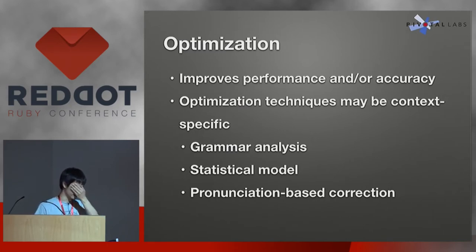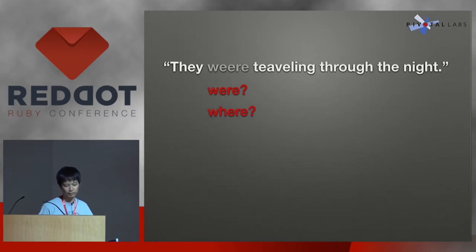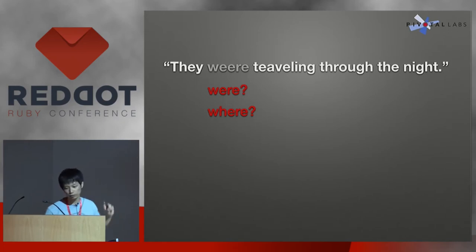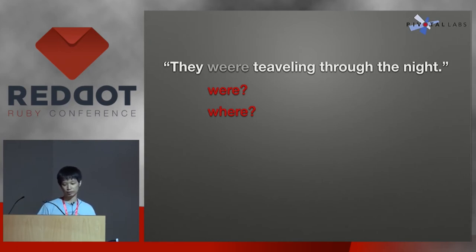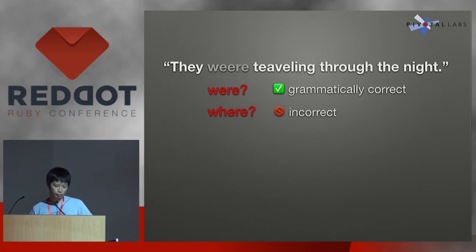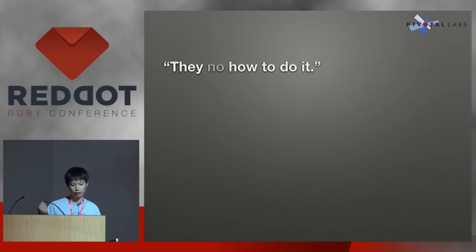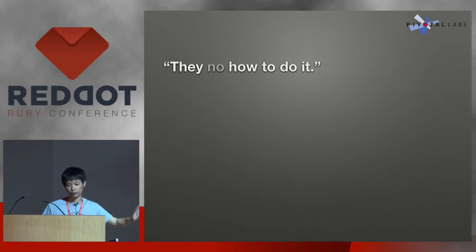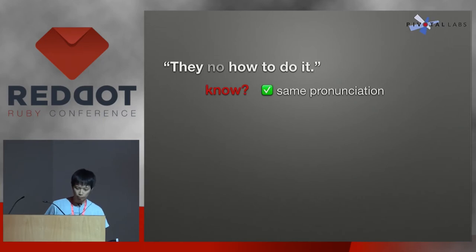Let's take a look at some examples. Obviously the second one is wrong — 'they were traveling.' It is easy for humans to choose the right one. But for computers, it is really hard because computers are not smart. In this case, you can implement some kind of grammar analysis because 'word' can come between 'travel' and 'the day,' but 'weird' can't. Another example: spell checkers are not only for humans. For example, if you talk to Siri, it can't recognize the difference between 'know' as a verb and 'no' as an answer. In this case, you can create a dictionary for the same sound of a word.